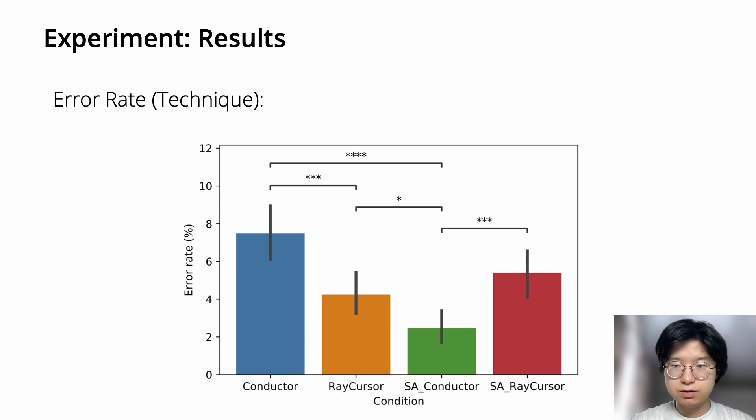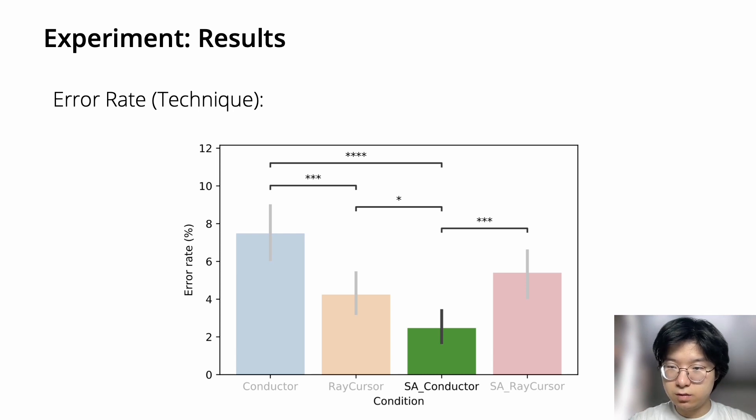This figure shows the error rate for each technique. With all four techniques, the error rate was less than 8%. Manual Conductor had the highest error rate, especially for far and dense targets. However, the error rate of Semi-automatic Conductor was the lowest, and it was significantly lower than Semi-automatic RayCursor and both manual techniques.